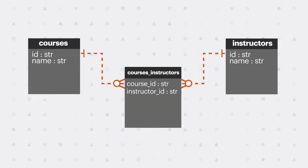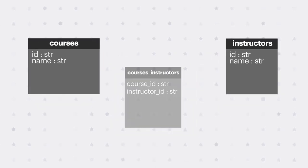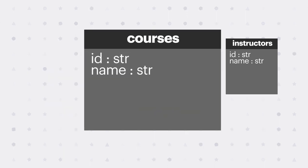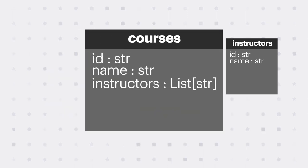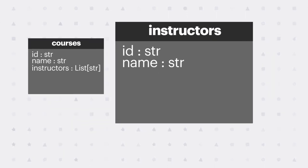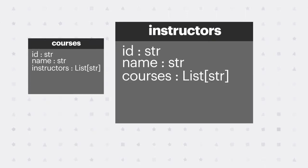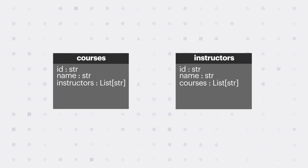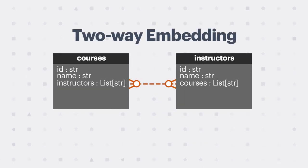In NoSQL, you can simplify this by embedding a list of instructor keys in each course document and a list of course keys in each instructor document. This is known as two-way embedding.